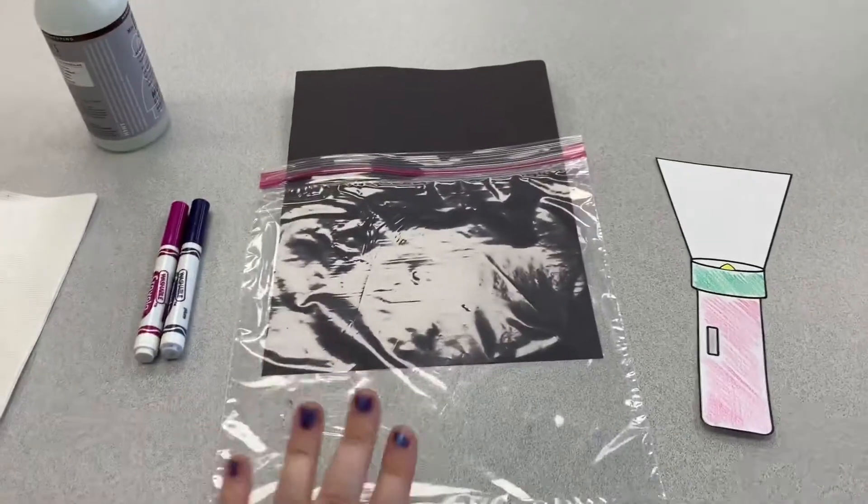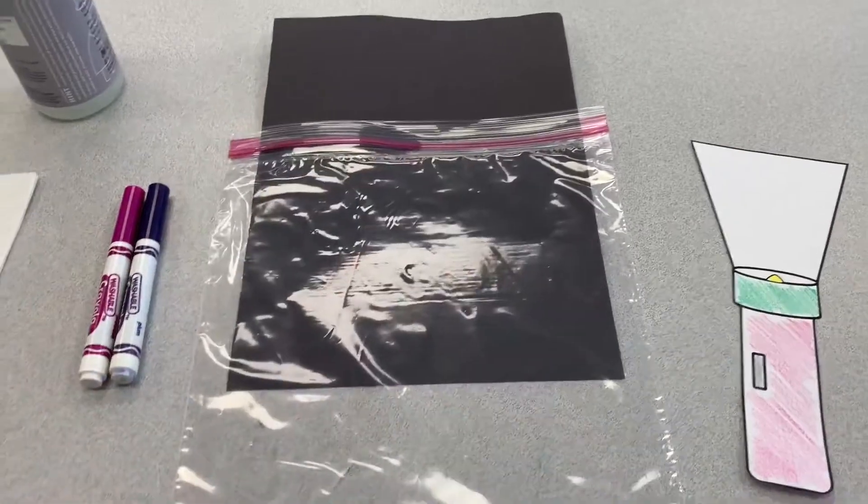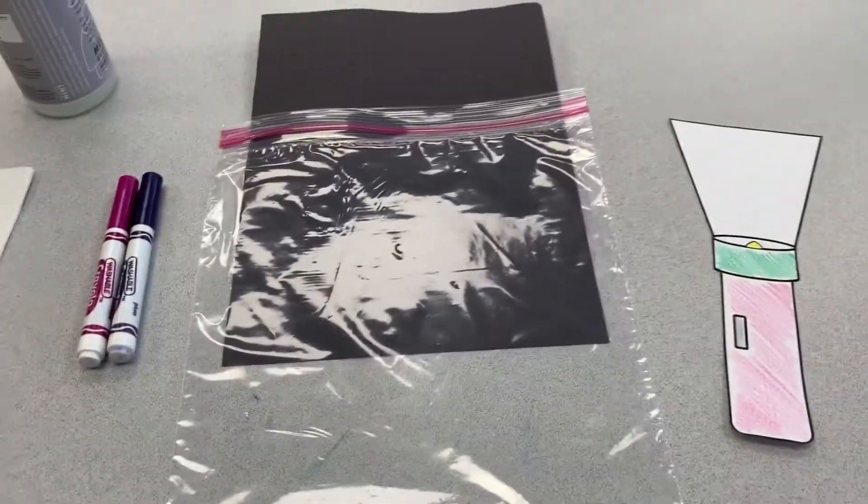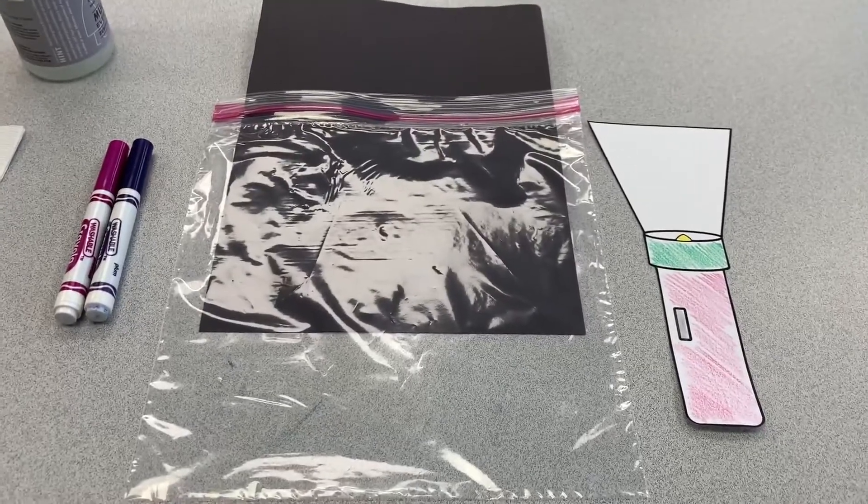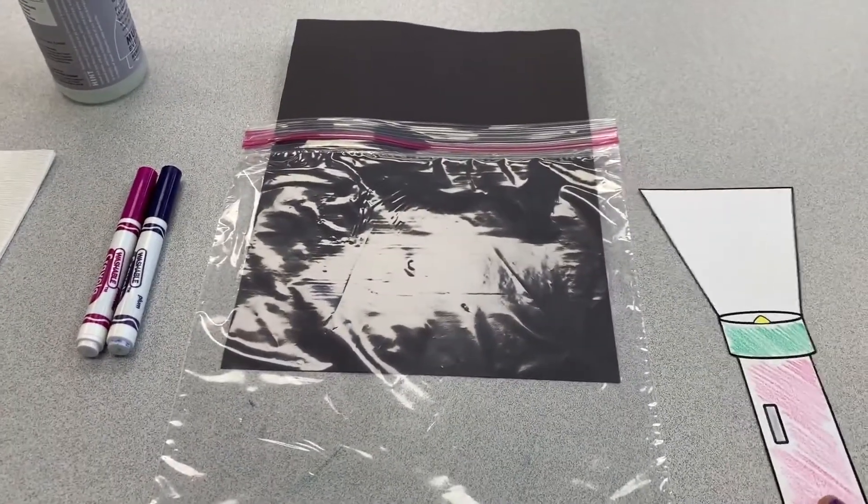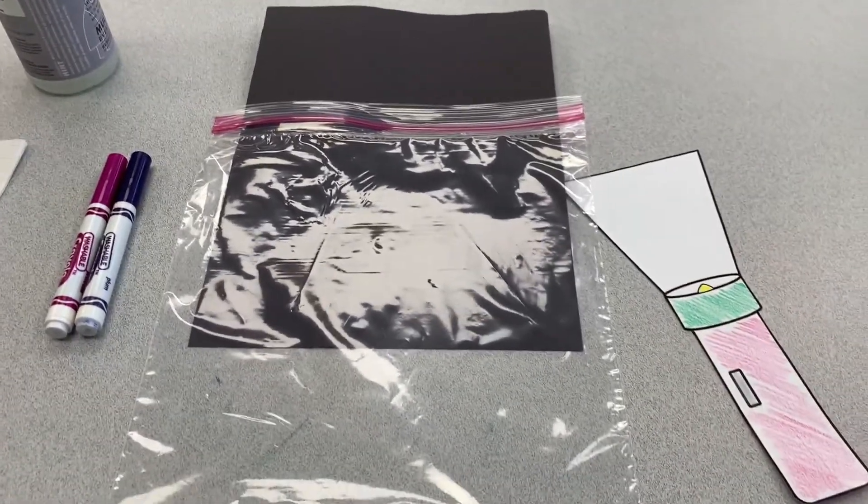Let's get started with our first activity. You will need the bag that all your crafts came in, the black piece of paper, a couple of markers, and your flashlight. Now, you can color yours like I did. But you want to keep this part of it clear or white.